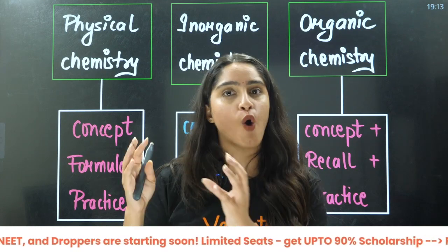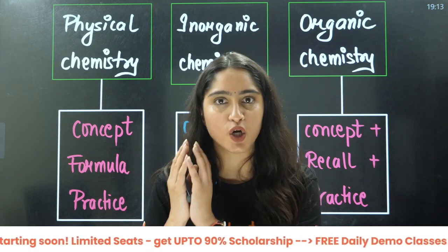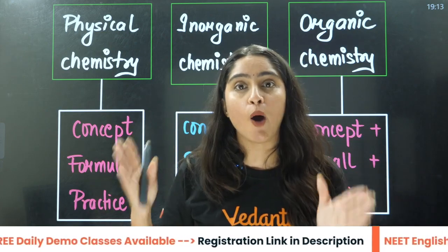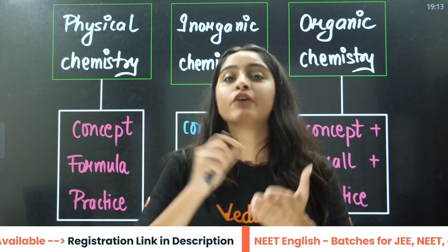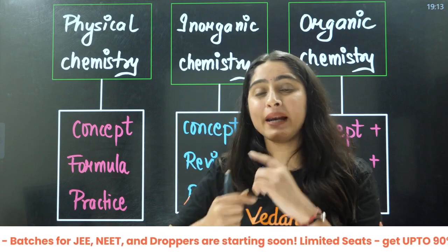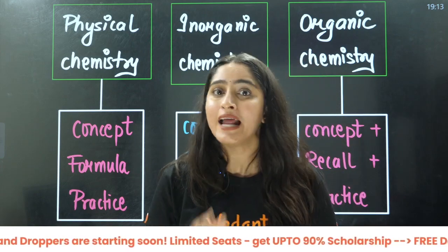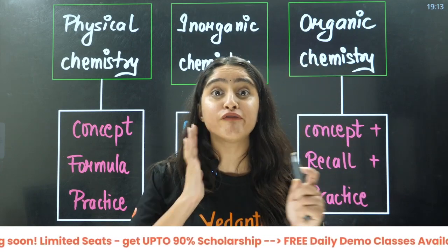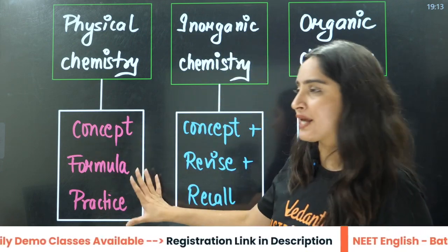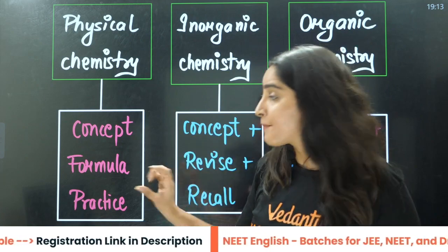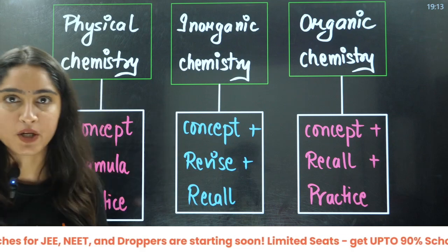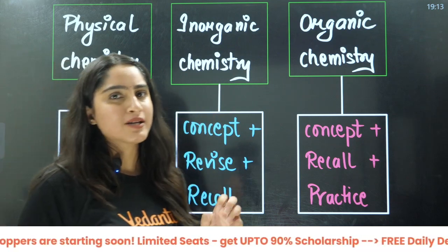For physical chemistry, firstly you need to know the concept — you need to have conceptual knowledge. After that, you need to have a formula sheet; you should have a proper notebook or diary where you write the formulas of all the chapters. Then, the application of formulas is very important and you need to practice a lot of different kinds of questions based on those formulas. Practice is the key.